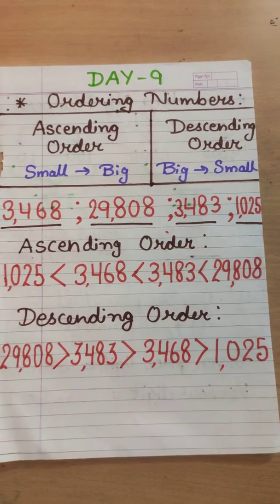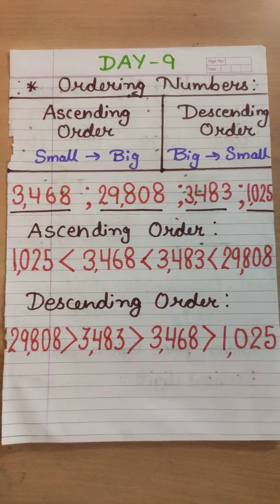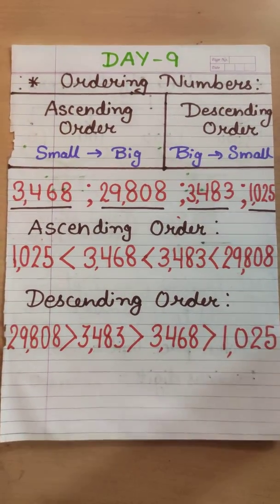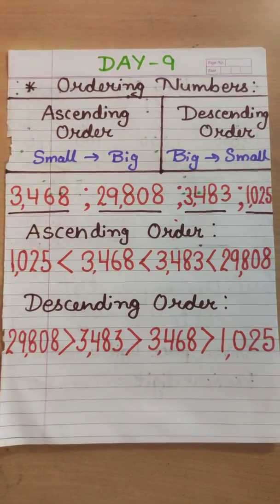So in ordering numbers, in our earlier class we have done the concept of comparing numbers, so it is required to understand that. I hope you all have understood the concept of comparing numbers, because then only we are going to order our given numbers. We can order the numbers in two ways: first, ascending order which moves from small to big, and then descending order which moves from big to small.